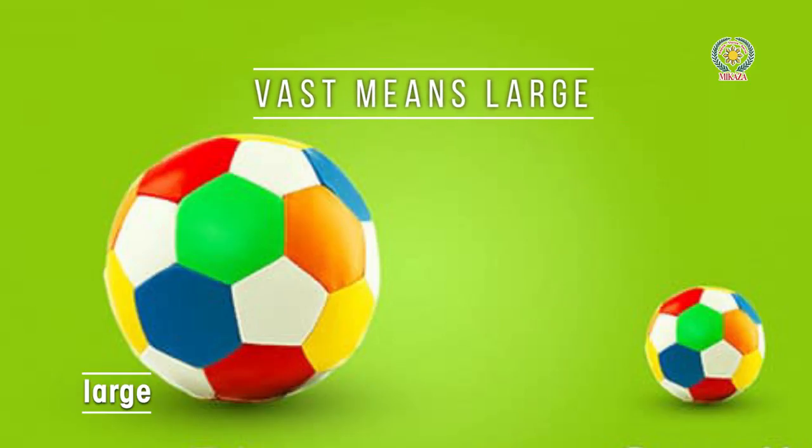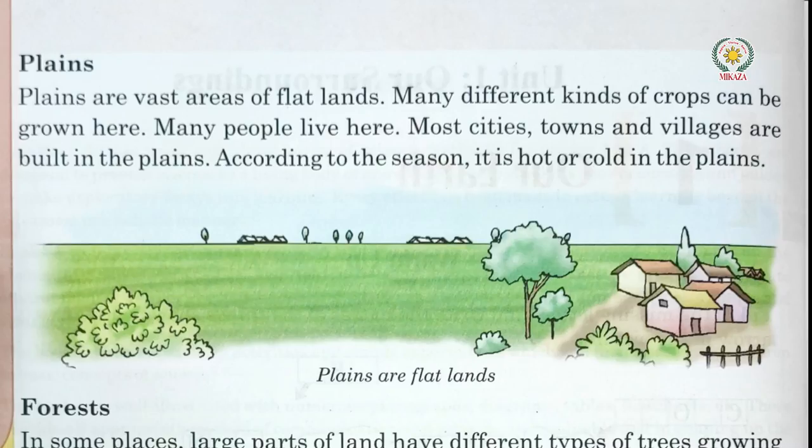Plains are vast areas of flat land. Many different kinds of crops can be grown here. Many people live here and most cities, towns, and villages are built in the plains. According to the season it is hot or cold in the plains. Most people live in the plains because of its suitable climate and because crops can easily be grown there.